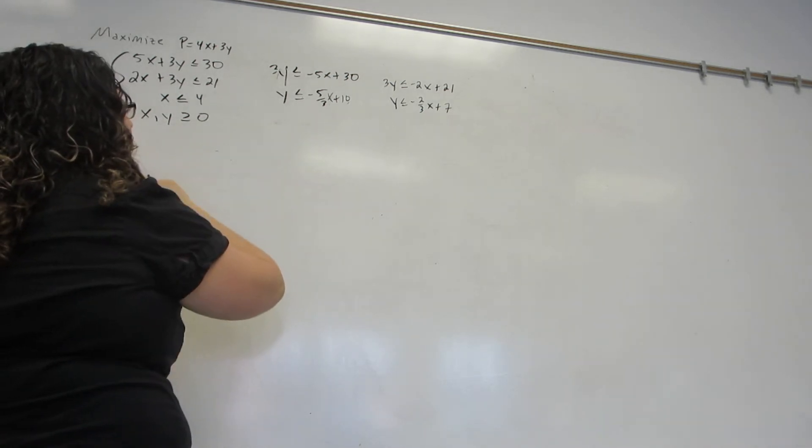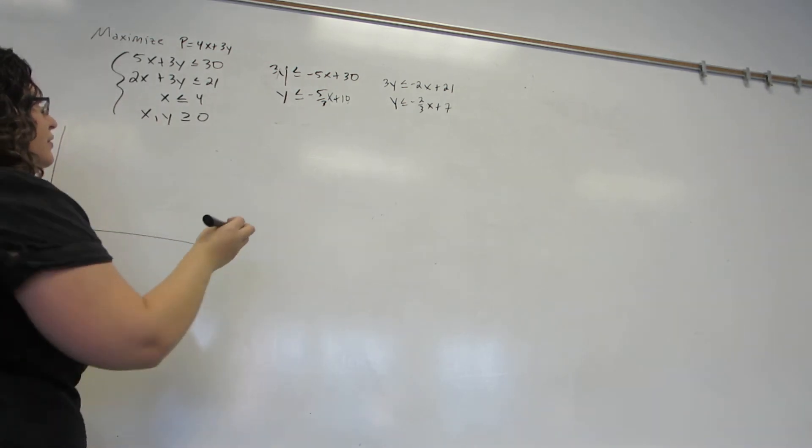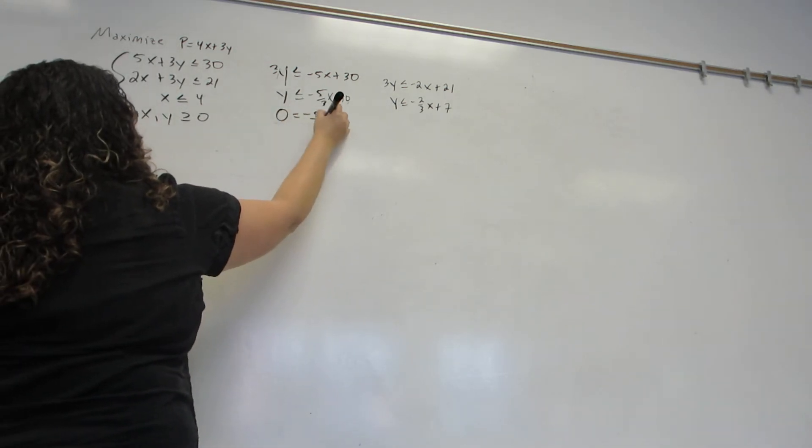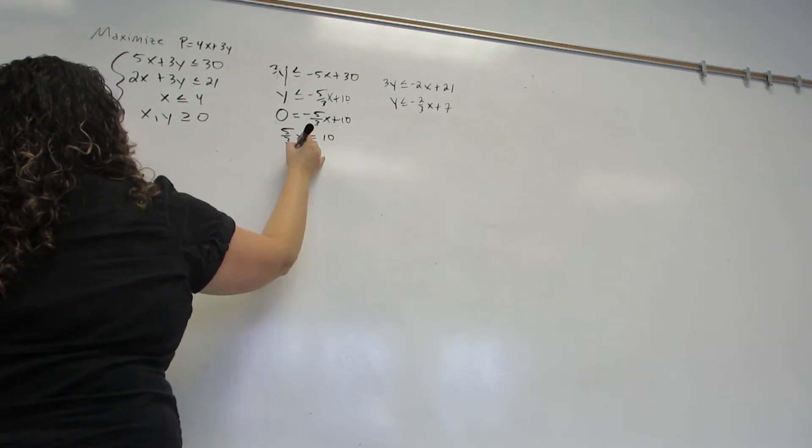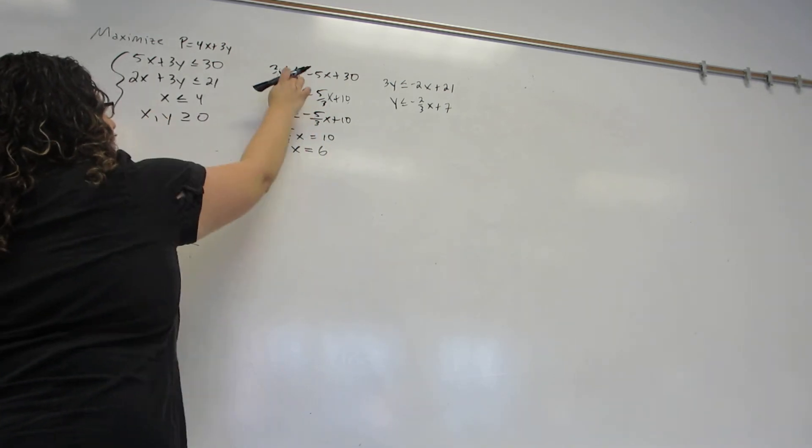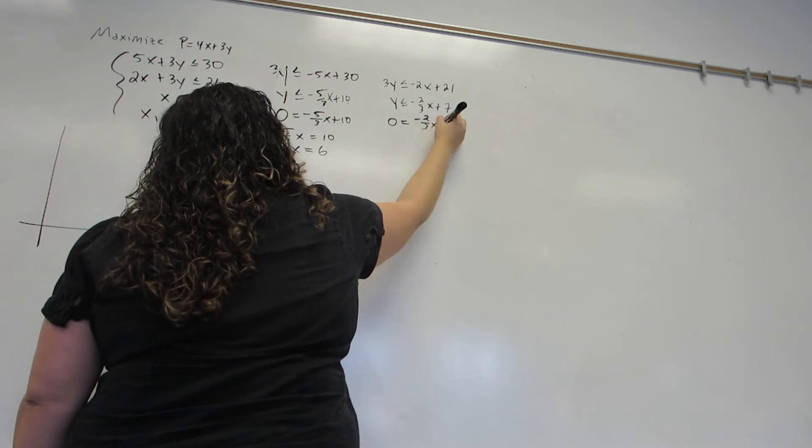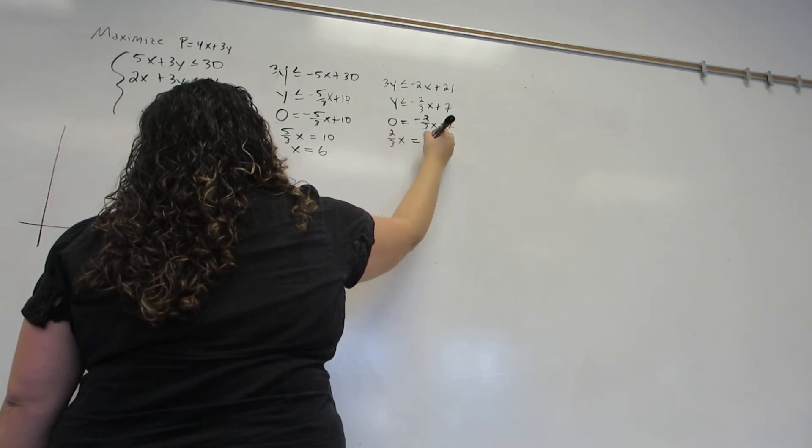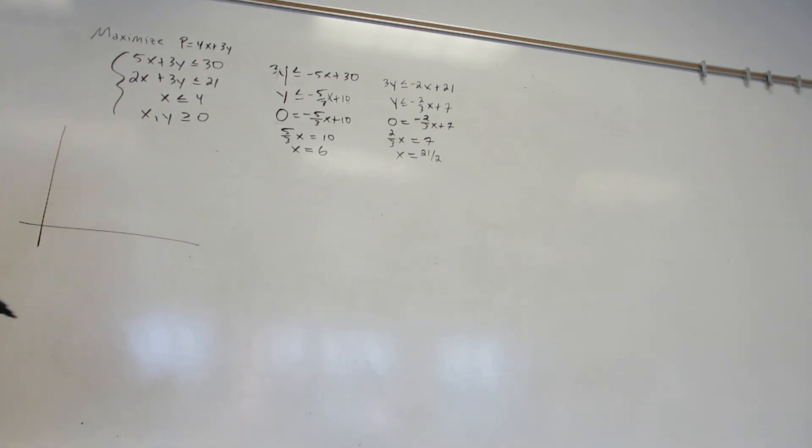So to find y-intercepts, I just look at the number at the end. To find x-intercepts, I'm going to plug in y equals 0 and solve for x. So the x-intercept of this line is 6. I'm going to do the same thing over here. And I get an x-intercept of 21 halves, which is 10.5.